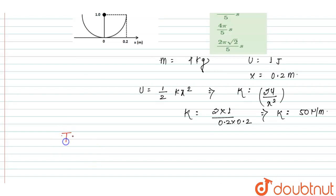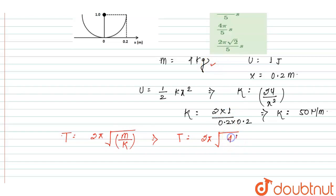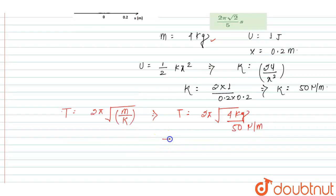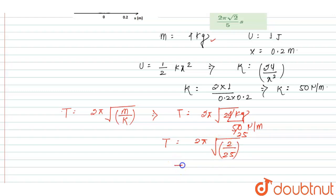Then finally, we have to find the value of the time period. Time period is equal to 2π under root M by K. We know that T is equal to 2π, mass is equal to 4 kg upon K is equal to 50 N per meter. Then the value of the time period is equal to 2π root under 2 by 25, which gives us 2π upon 5 into root 2 seconds.